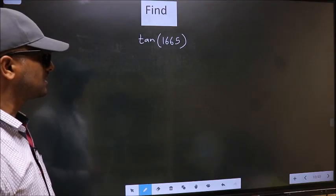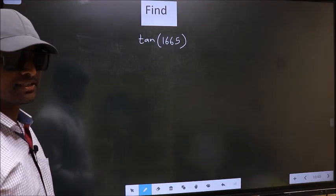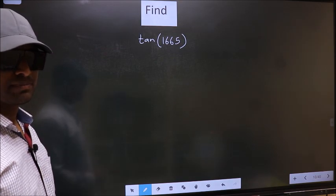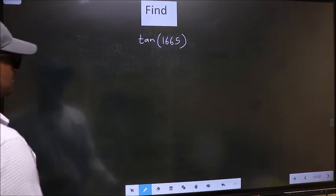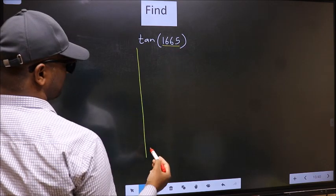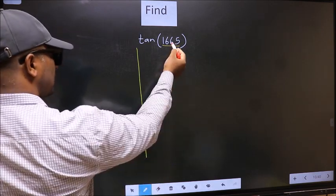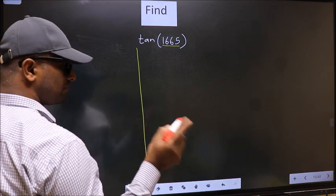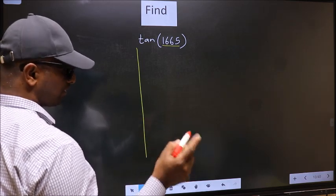Find tan(1665°). To find this, we should follow this method. Here we have 1665. Now we should check which two multiples of 180 that 1665 lies between.